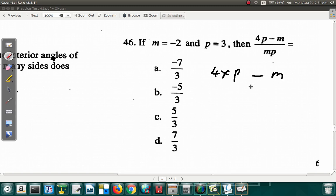4p minus m over m times p. Now, we know that p is equal to 3. So when it says 4p, it's 4 times p, which is 4 times 3 minus m. Minus m. When it says minus m, m is negative 2. So remove the m and put negative 2. And you have to watch the signs carefully. The negative over mp, m times p. It's negative 2 times 3 because m times p. So it's negative 2 times 3. Let's see what happens.